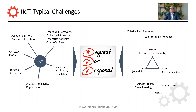So you will have to integrate your assets, you will have to integrate your back-end, you will have to use some kind of local area network probably, a wide area network or even some specialized IoT-specific networking technology. You will use artificial intelligence or even digital twin to support your use case, and you want all of that delivered in a secure, resilient and reliable way.